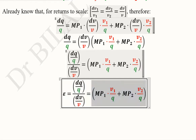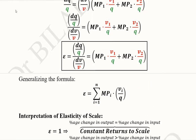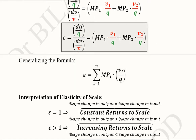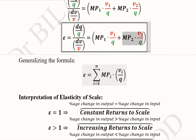This is the formula for elasticity of scale, in which we have inputs v1 and v2, their marginal products multiplied with them, and the output q in the denominator. We can generalize this formula because there can be more than two inputs. In real life we can have multiple inputs, so the formula is expressed as the sum of (mpi × vi / Q) for i ranging from 1 to N, where N is any positive number equal to the total number of inputs.